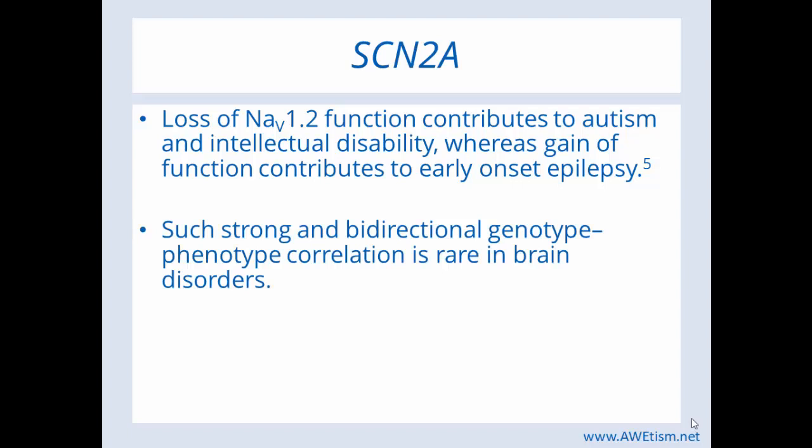Strong and bidirectional genotype-phenotype correlation is rare in brain disorders. That just means you have the genotype — the SCN2A — you have a mutation. The phenotype means physically what happens. When you have a loss of function, it's been found that contributes to autism and intellectual disability. However, if you have a different type of mutation and you have a gain of function, the phenotype is that it contributes to early onset epilepsy. They call it bidirectional, and it's very strong.